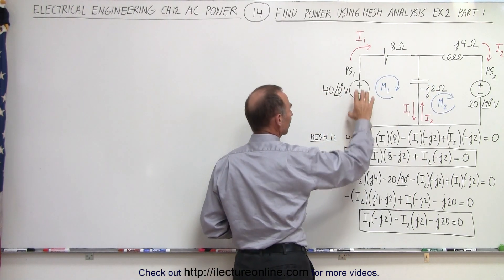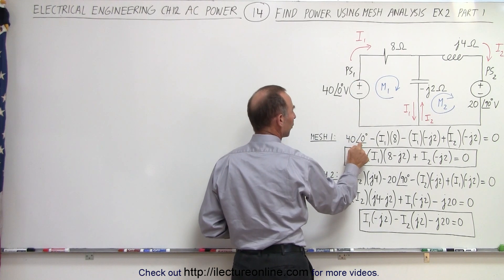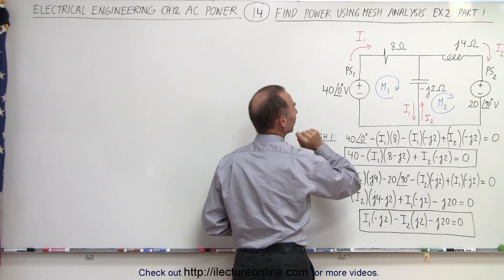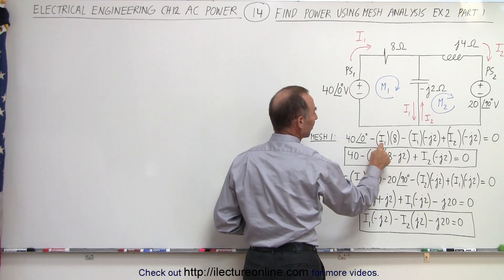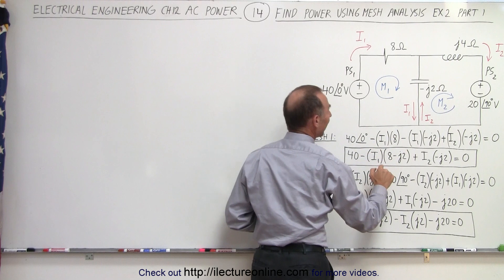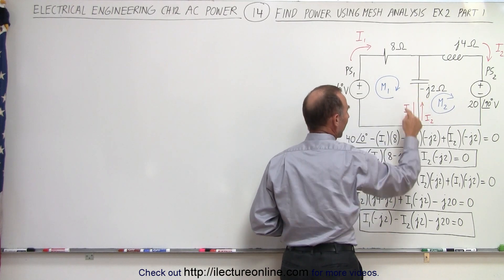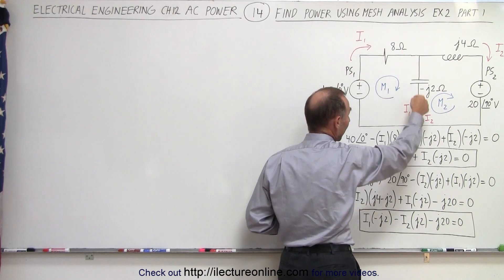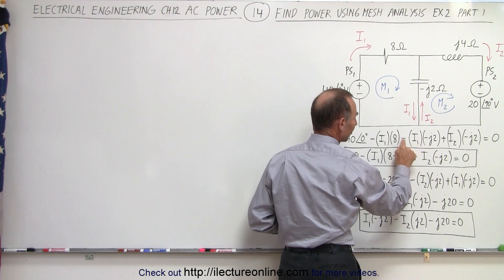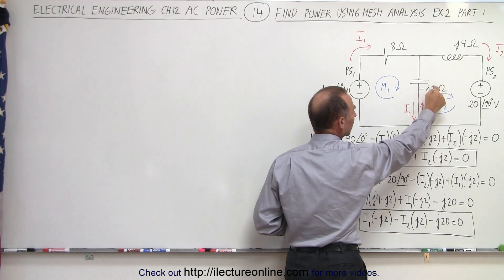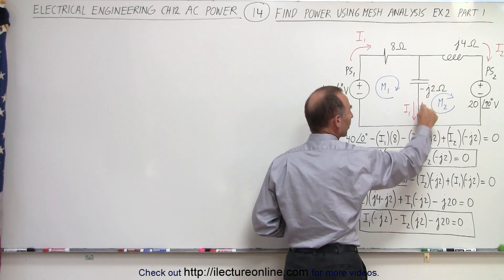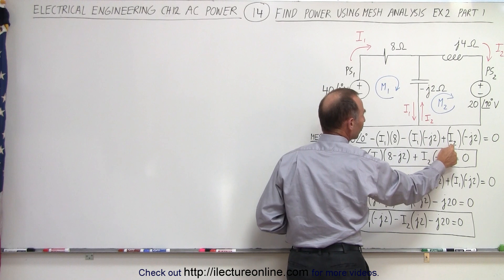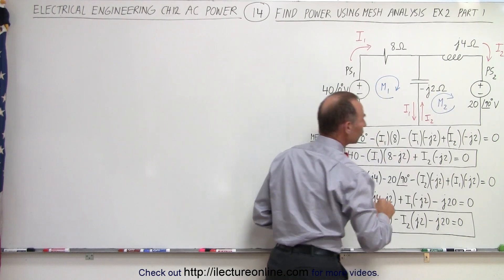Starting from here we have a voltage rise — 40 volts, zero degree phase angle for the power supply. We have a voltage drop here, therefore the negative I1 times the resistance. And then we have a voltage drop across the capacitor relative to current I1, so it's I1 times minus J2. And then we have a voltage rise relative to I2, so it's plus I2 times minus J2.